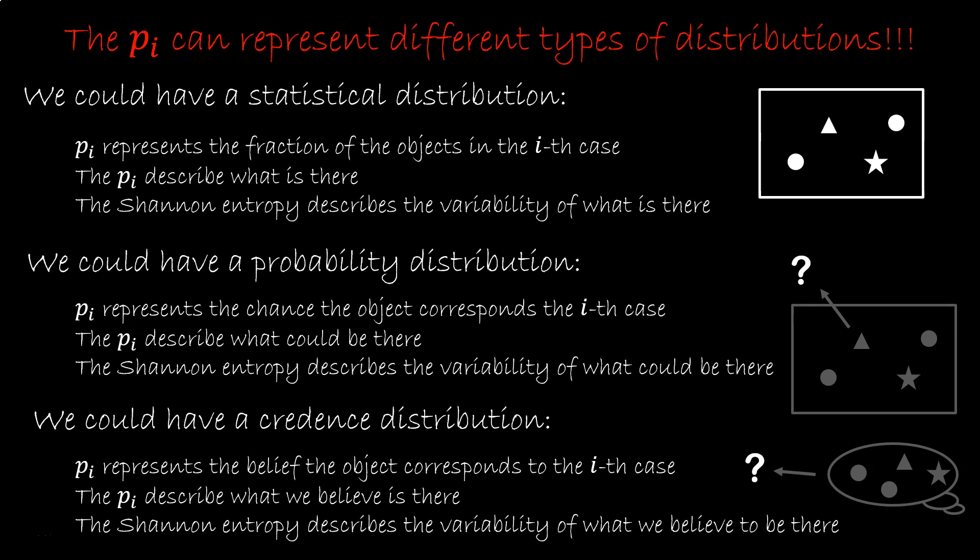Suppose you learn information theory as part of a class on machine learning. You are dealing with credence, what the machine thinks is there. So you think, ah, the Shannon entropy is about credence, about Bayesian probability and how to do inference. Or you learn Shannon entropy as part of ecology. You may be dealing with statistical distribution of animals and characterization in different species. And you think, ah, Shannon entropy is about statistical distribution. Very different perspectives.